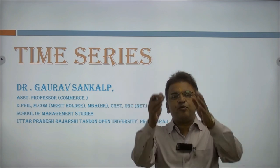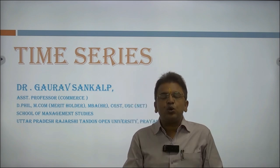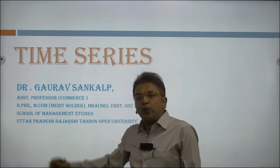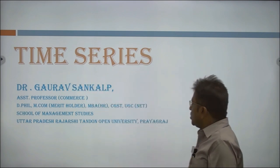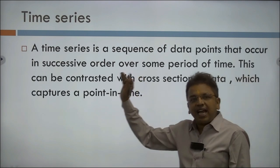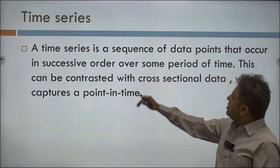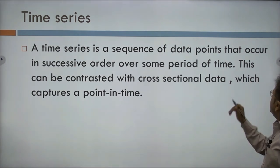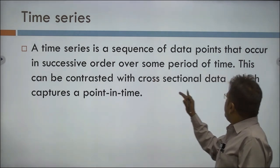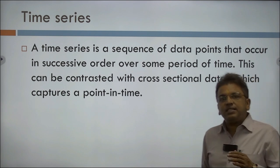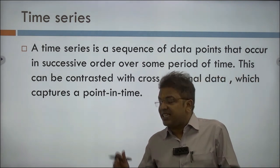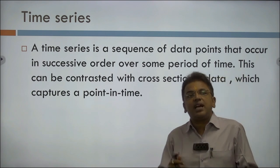The word series means there are certain variables, certain values which we are going to take into account with a specific time. A time series is a sequence of data points that occurs in successive order over some period of time — over a month, a year, or 10 years.